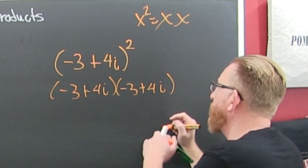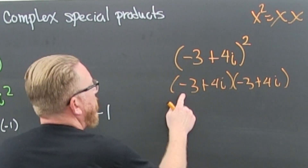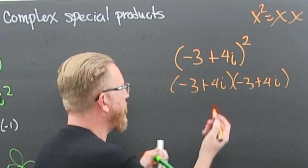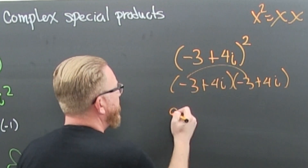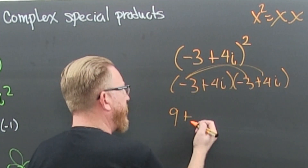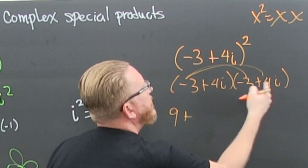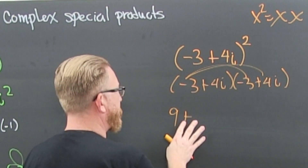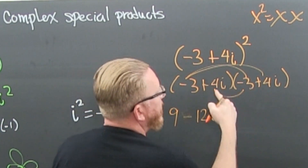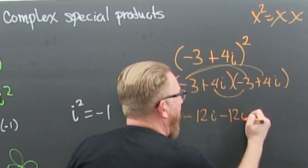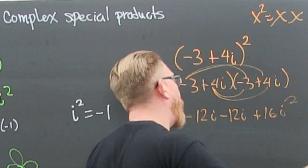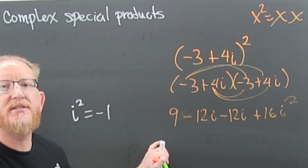First, Inner, Outer, Last. The first: minus three times minus three is nine. Outer: minus three times four i is minus 12i. Inner: again minus 12i. Last: four i times four i is 16i², which evaluates to minus one.